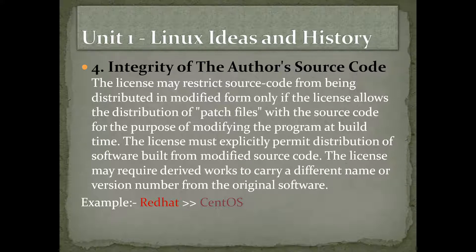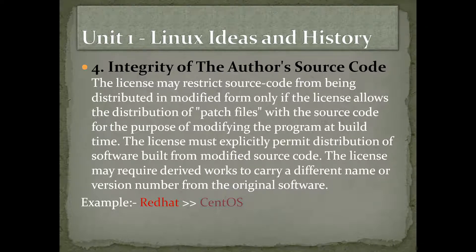The license may require derived works to carry a different name or version number. That means, for example, Red Hat is an operating system designed carefully for business purposes with carefully chosen applications. You cannot just copy it and redistribute it under the same name — I can include a clause about that because I also want to survive. However, since it's open source, you can use all my ideas and create your own with a different name. The best examples would be CentOS, derived from Red Hat, or Ubuntu, derived from Debian.